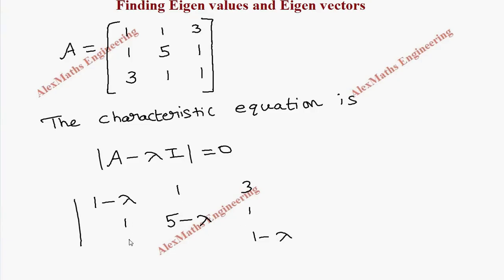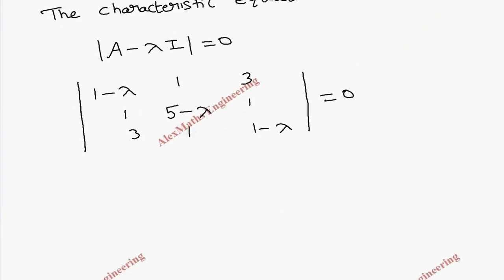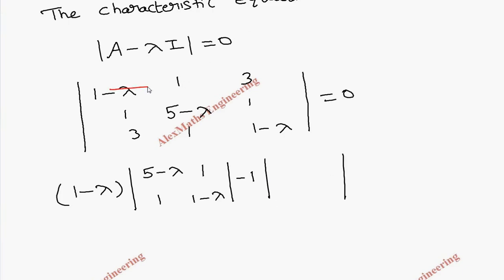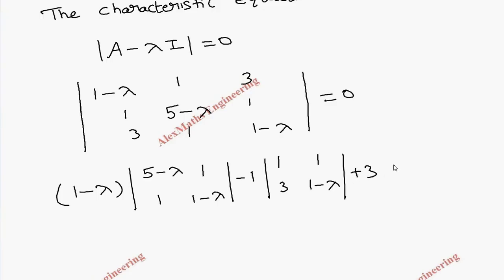Now we evaluate this determinant by expansion. We take the first element (1 minus lambda), close its row and column, and write the resulting 2x2 determinant. Then we take the second element with a minus sign, close its row and column. Finally we take the last element 3, close its row and column, getting four elements: 1, (5 minus lambda), 3, and 1.